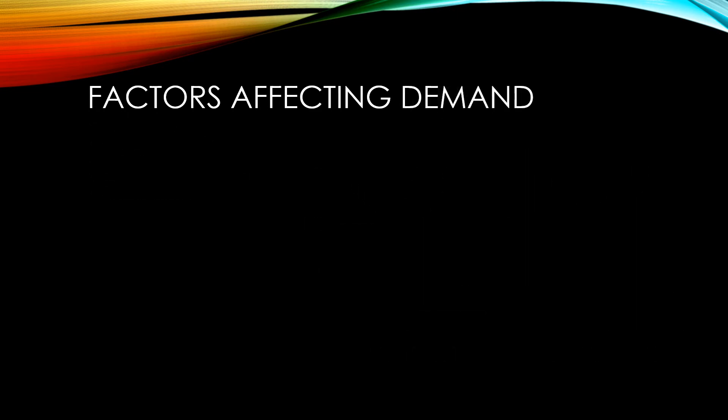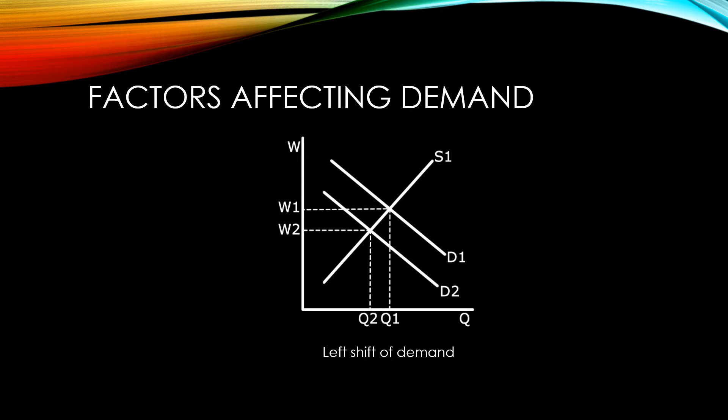There are also a number of factors that can affect demand in the labour market. But let's start again by having a look at what happens in the labour market when we have a left shift or a right shift of demand. A left shift of demand leads to lower equilibrium wages and less people employed. While a right shift of demand leads to higher equilibrium wages and more people employed.